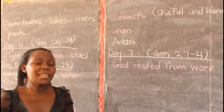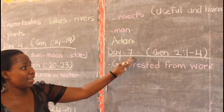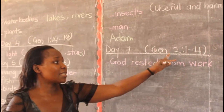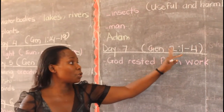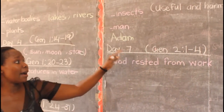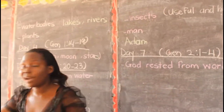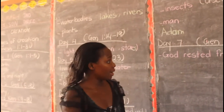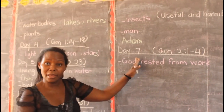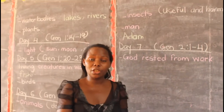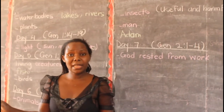God created all those things in six days. Then on the seventh day — read Genesis chapter 2, from verse 1 to verse 4 — God rested on the seventh day. God rested from work. All these things were made in only six days, and on the seventh day our God rested. So the seventh day we call it a holy day. That's why we always go to church — to worship and praise our God, and to thank Him for all the wonderful things He put for us on earth.